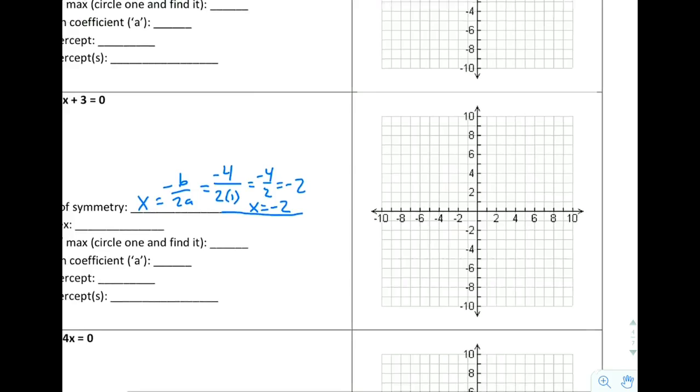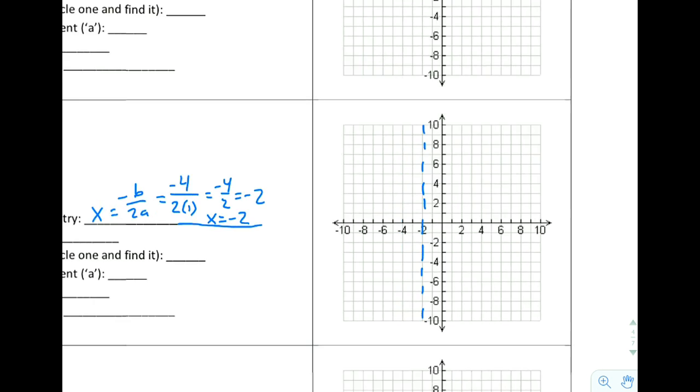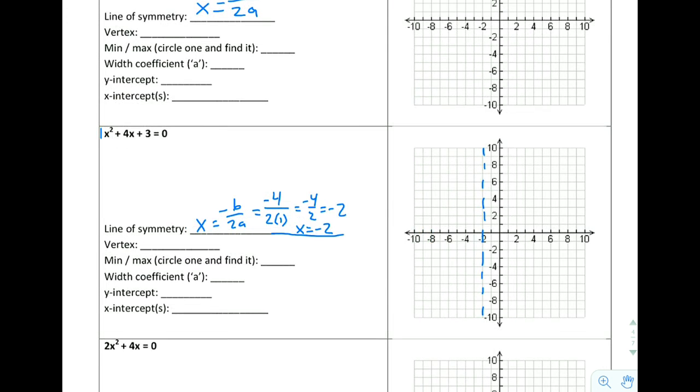And if I were to go over to my graph here, x equals negative 2, and I were to draw this on here, I would put a dashed line straight up and down where x is equal to negative 2. So there's my line of symmetry. I'll use that in just a moment.